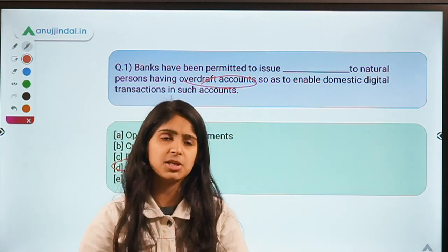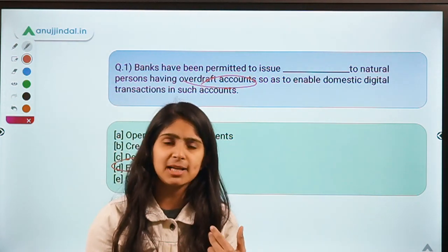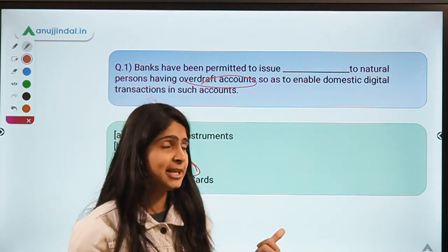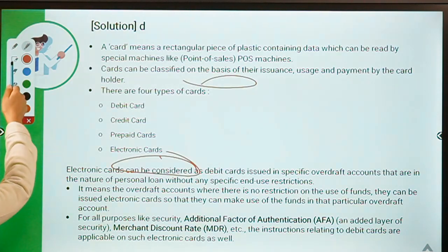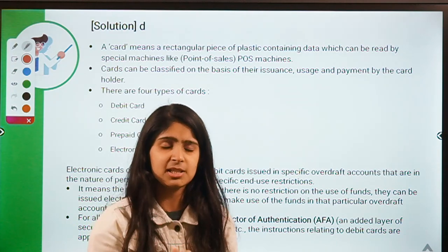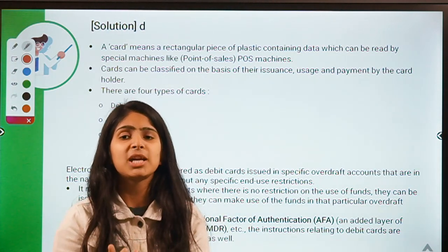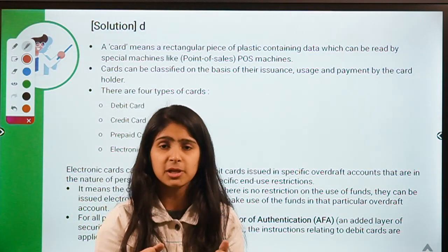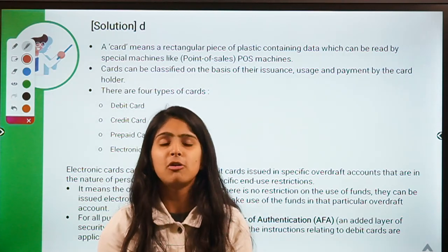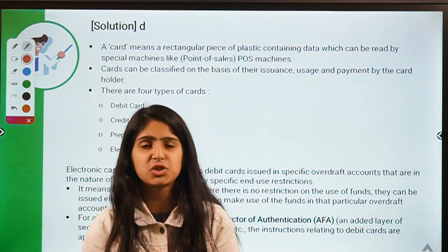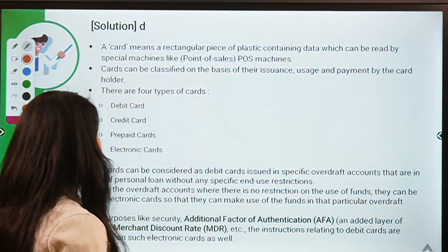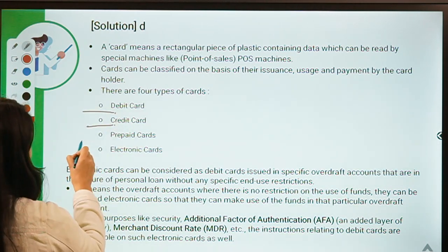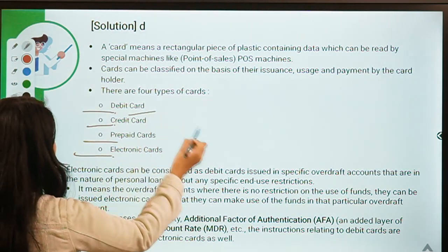Most of us on a daily basis use different types of cards issued by banks or other financial institutions. In simple terms, a card is nothing but a piece of plastic, but with it you can withdraw money from an ATM, pay at a shopping store or POS terminal, or make online payments. There are different types of cards issued by the central bank — four major types: debit cards, credit cards, prepaid cards, and electronic cards.